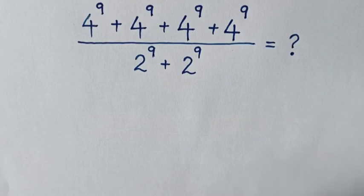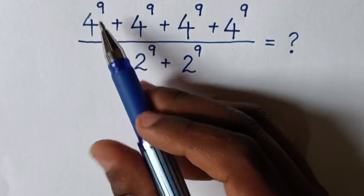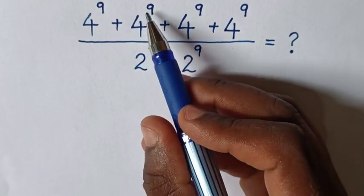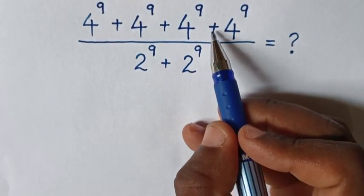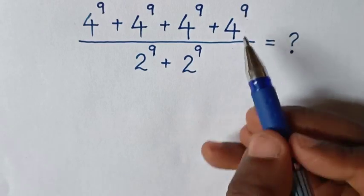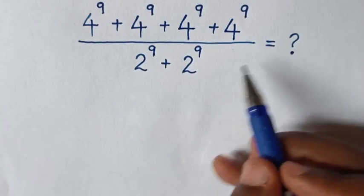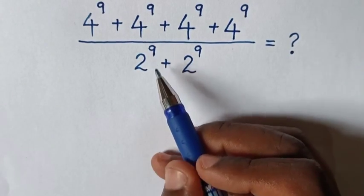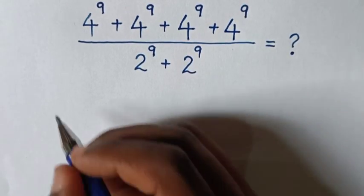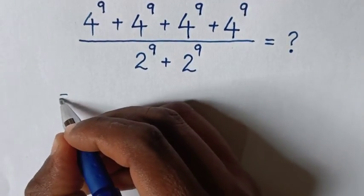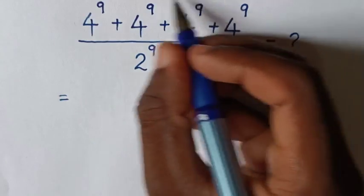Hello. We have 4 power 9 plus 4 power 9 plus 4 power 9 plus 4 power 9, all over 2 power 9 plus 2 power 9. So this is equal to: